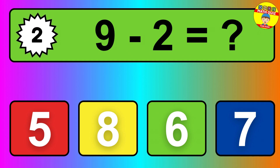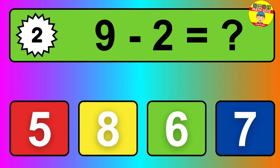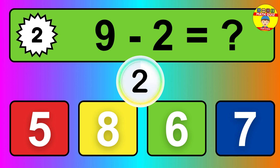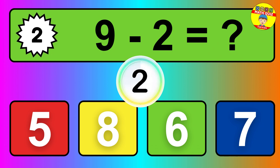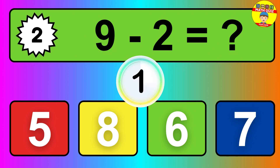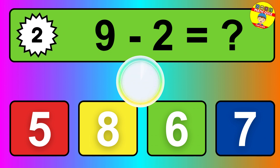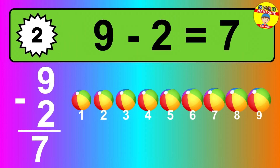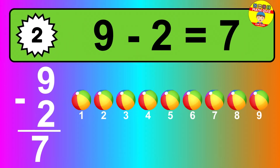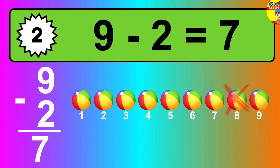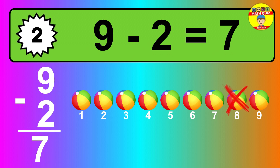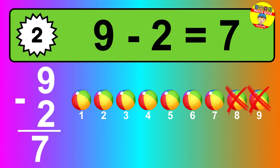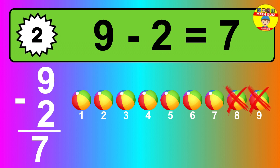Question 2. 9 minus 2 equals what? So the answer is 9 minus 2 is 7. Let's count it. 1, 2, 3, 4, 5, 6, 7.